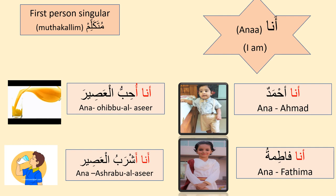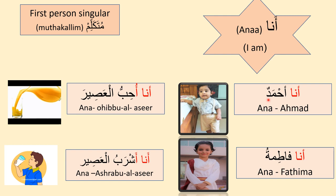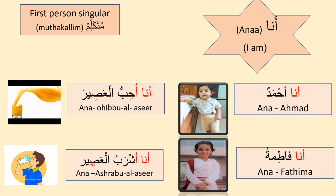Ana meaning 'I am' is a first person pronoun, used for singular male and female. For example, 'Ana Ahmadun' — I am Ahmad — used for male. 'Ana Fatima' — used for female. In a verbal sentence: 'Ana uhibbul asir' — I like juice. 'Ana ashrabul asir' — I am drinking the juice. Notice the verb starts with alif after Ana in a verbal sentence.